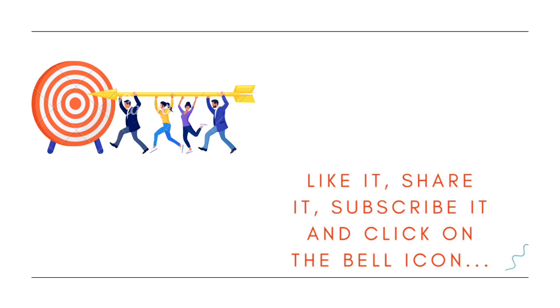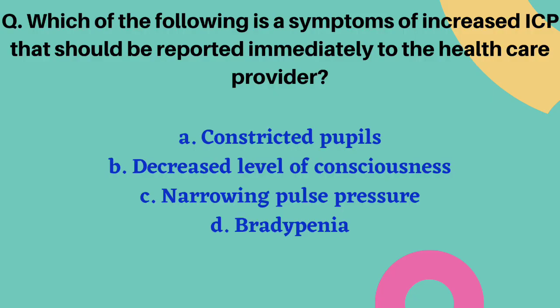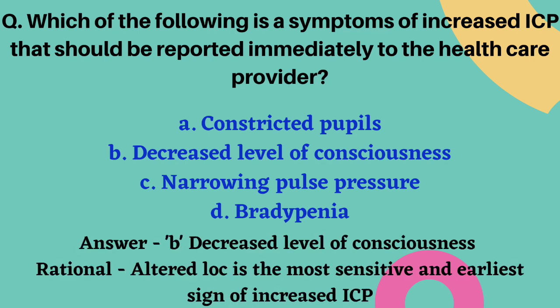The first question: which of the following is a symptom of increased intracranial pressure that should be reported immediately to the healthcare provider? Options are constricted pupil, decreased level of consciousness, narrowing pulse pressure, and bradycardia. The correct answer is option B, decreased level of consciousness, because altered level of consciousness is the most sensitive and earliest sign of increased ICP.